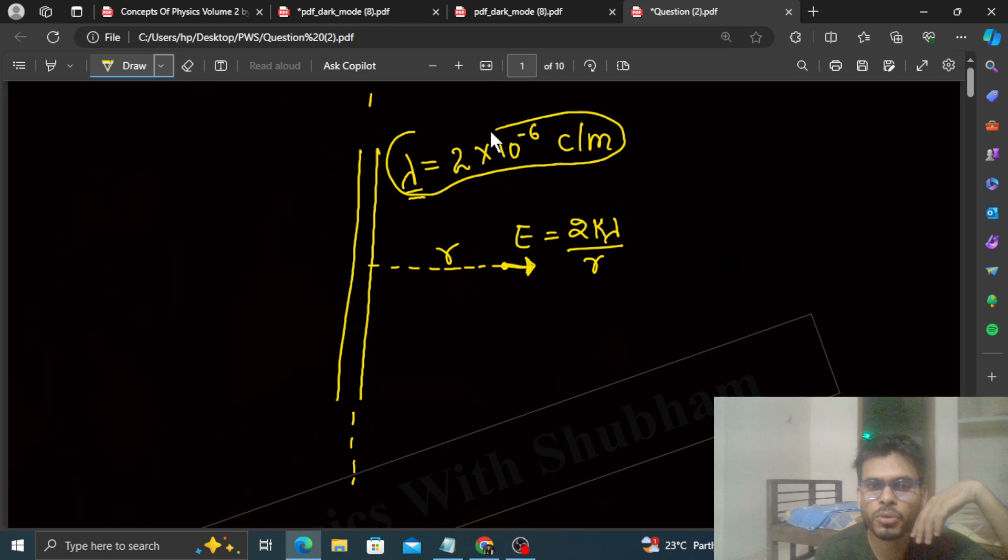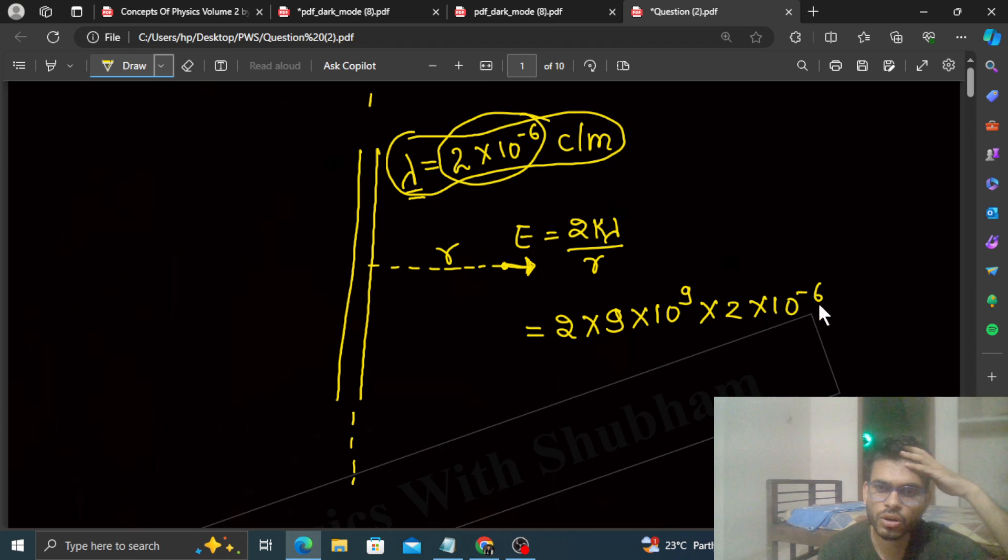2k has a value of 9 × 10^9. Lambda is given as 2 × 10^-6. And r is the distance asked, which is 4 centimeters, so 4 × 10^-2 meters.